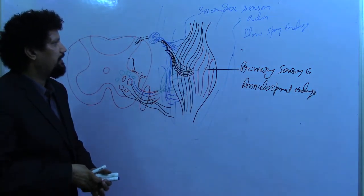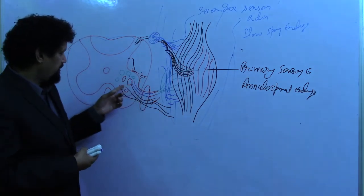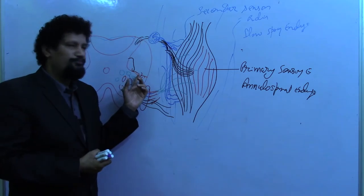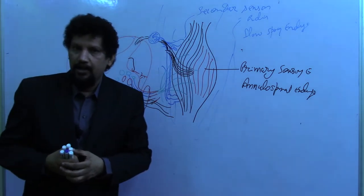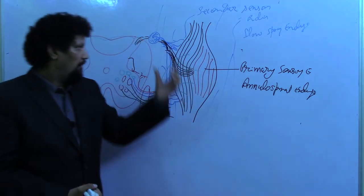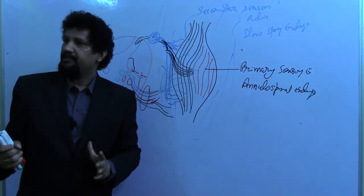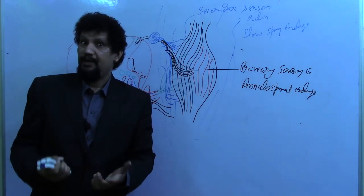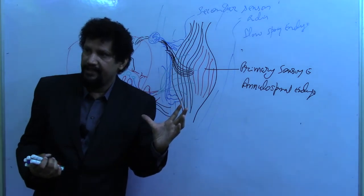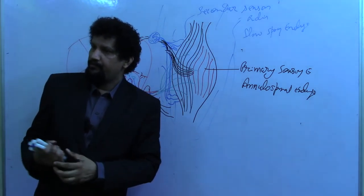In summary, the nerve supply of the skeletal muscle has 60% motor fibers coming from the ventral horn, including alpha neurons and gamma neurons, plus post-ganglionic sympathetic fibers for the smooth muscles of the vessels. The remaining 40% are sensory fibers: thick myelinated fibers bringing proprioception and position sense, and fine non-myelinated C fibers bringing pain, touch, and temperature.